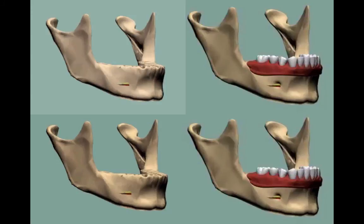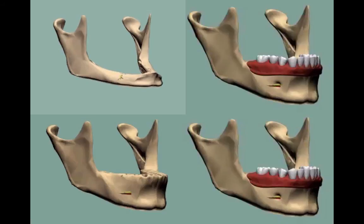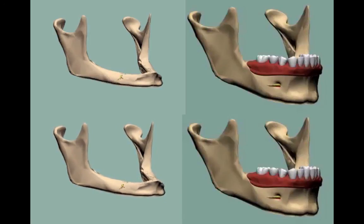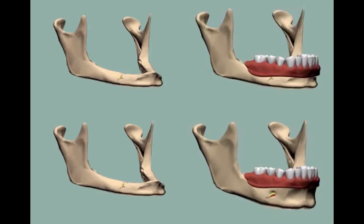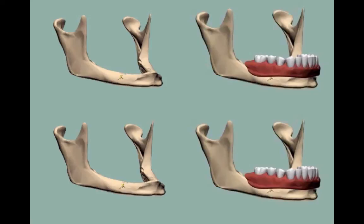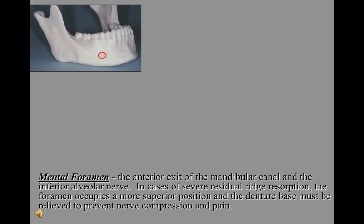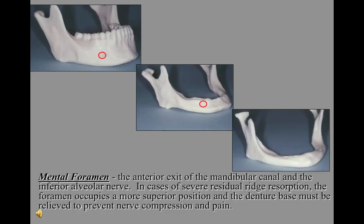This picture shows the resorption of the mandible over time. Note how the mental nerve and mental foramen become positioned on top of the ridge as the mandible resorbs severely. As resorption progresses, the denture moves more anteriorly, meaning the mandible takes a position more like a Class III relationship. The mental foramen is the anterior exit of the mandibular canal and the inferior alveolar nerve. In cases of severe resorption, the foramen occupies a more superior position and the denture base must be relieved to prevent nerve compression and pain.